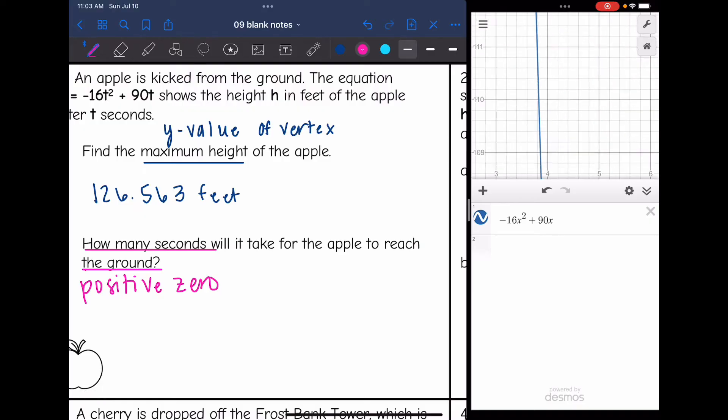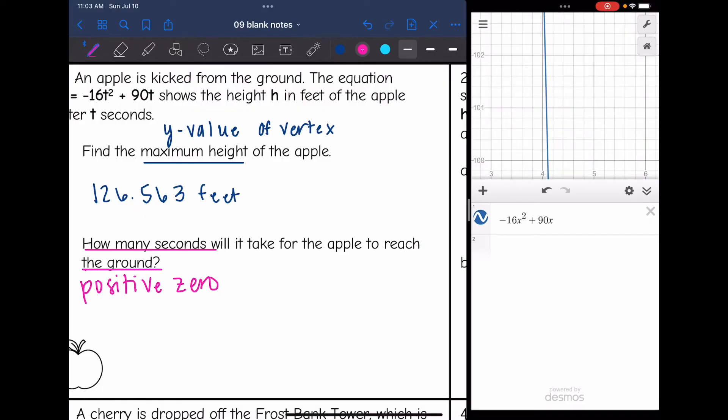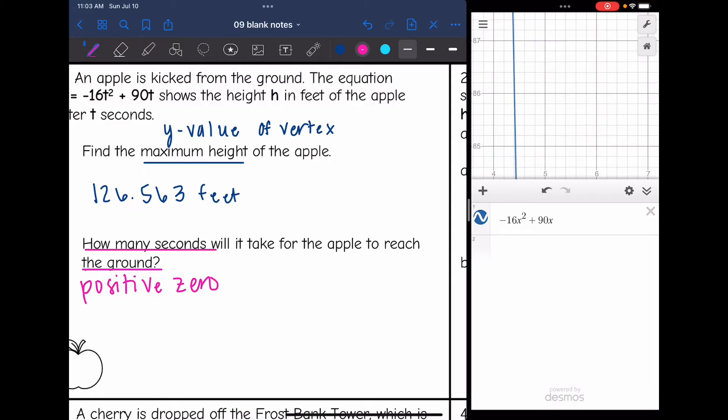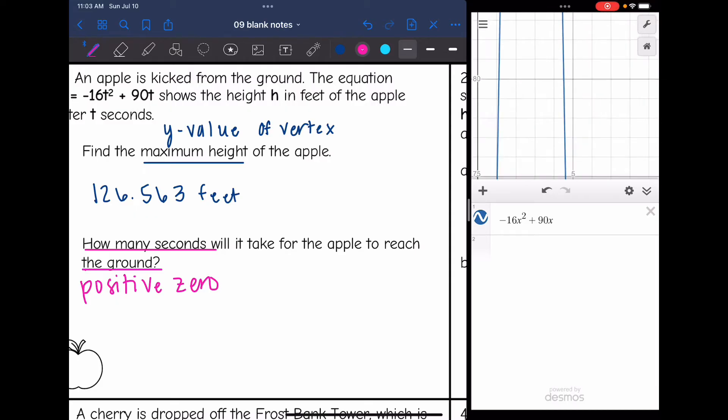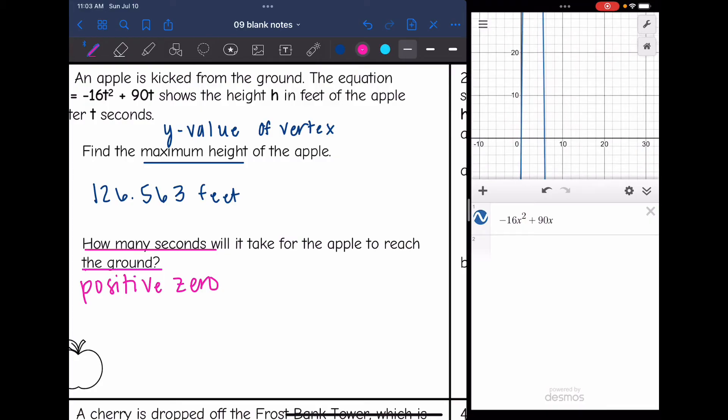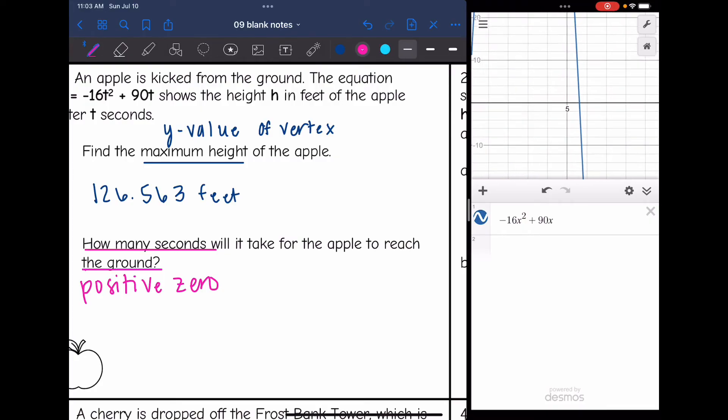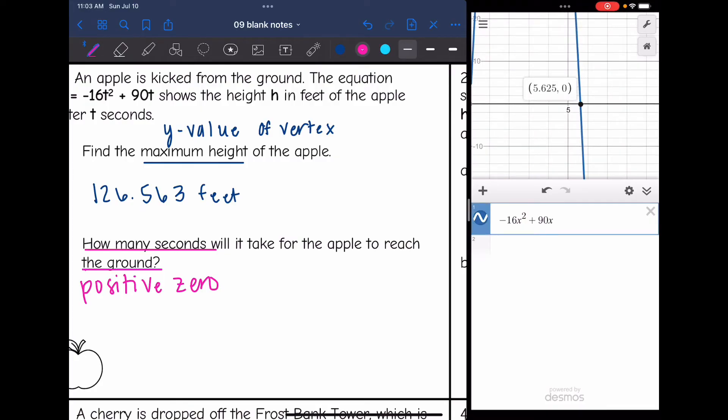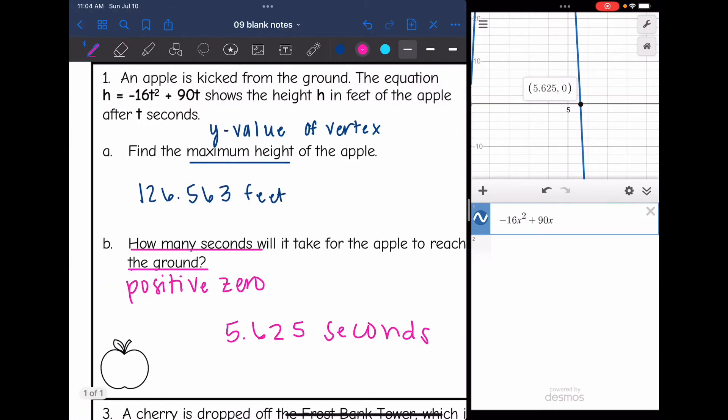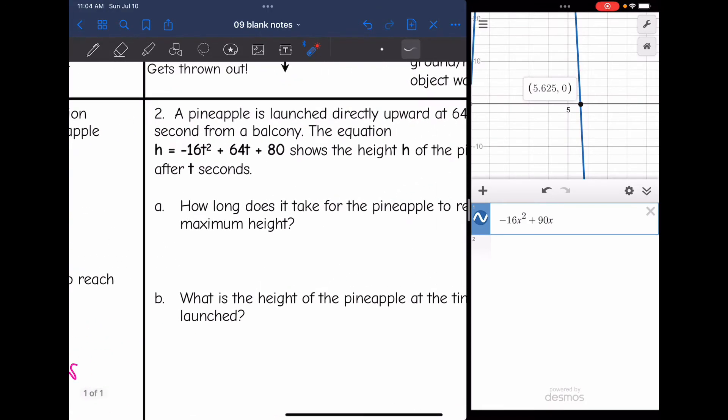Let's find that on Desmos. There is the apple falling to the ground. I can see it's going to take more than four seconds. There's the x-axis and the positive zero. It's going to take 5.625 seconds. You could have solved this equation using the quadratic formula and then just use the positive zero, but I just like to use Desmos because it models this situation for you.